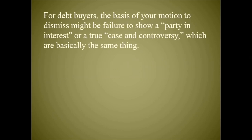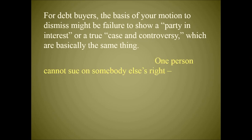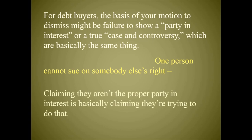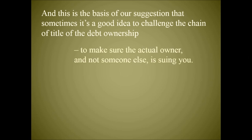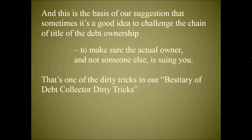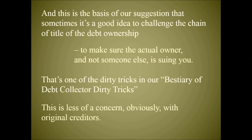For debt buyers, the basis of your motion to dismiss might be failure to show a party in interest or a true case or controversy — which are basically the same thing. One person cannot sue on somebody else's right. Claiming they aren't the proper party in interest is basically claiming they're trying to do that. This is the basis for challenging the chain of title of the debt ownership to make sure the actual owner — and not someone else — is suing you. This is less of a concern, obviously, with original creditors.